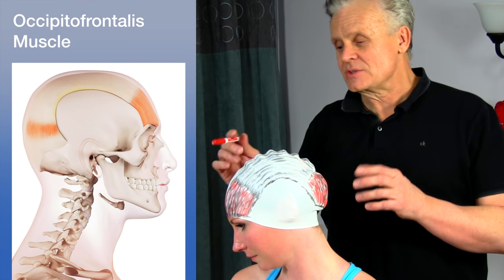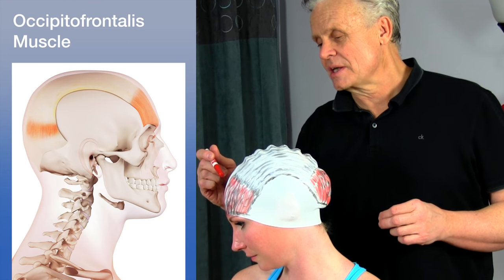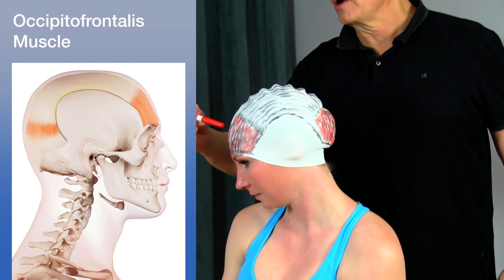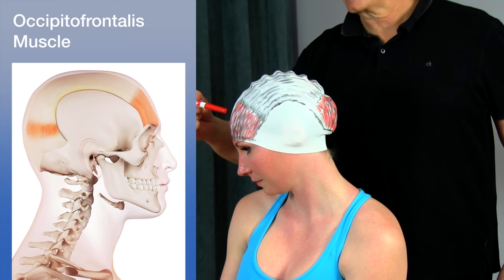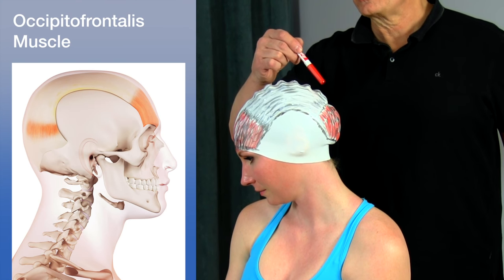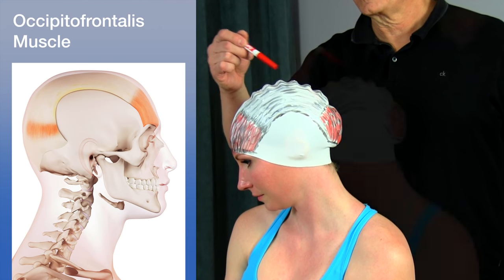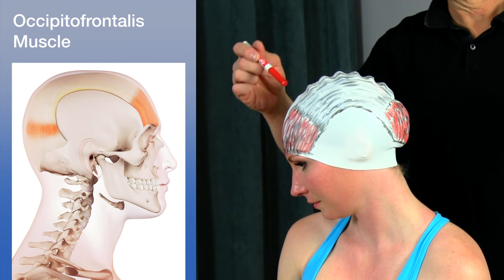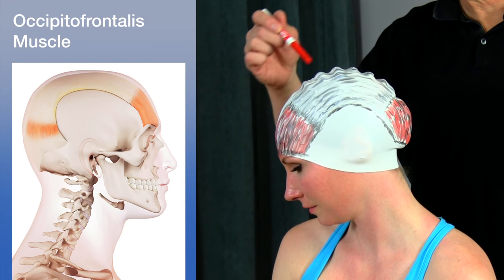This muscle is really quite interesting because when the frontal area contracts, it actually pulls the posterior forward, and when the posterior contracts, it pulls the anterior back.